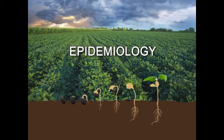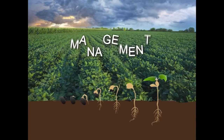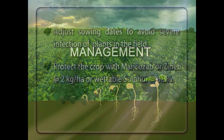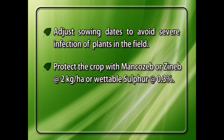The primary source of inoculum is teliospores in cooler regions and on collateral hosts. Secondary spread is by wind-borne uredospores. It attacks french beans, green gram, black gram, and cowpea. For management, adjust sowing dates to avoid severe infection. Protect the crop with mancozeb or zineb at the rate of 2 kg per hectare, or wettable sulfur at the rate of 0.3%.